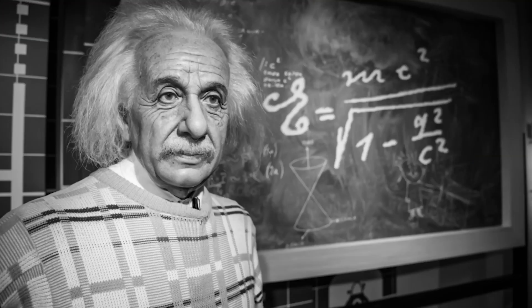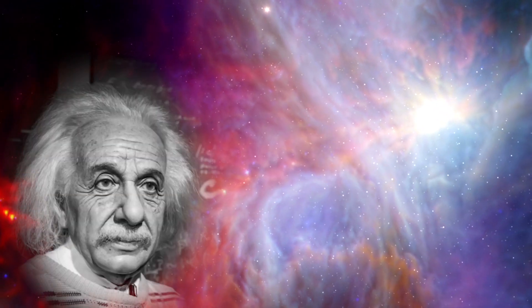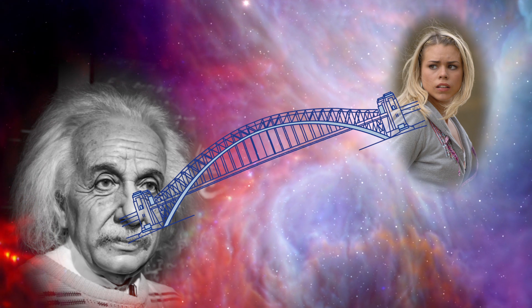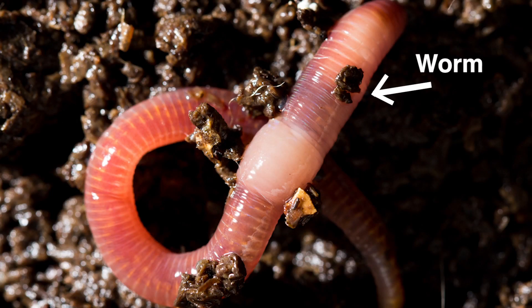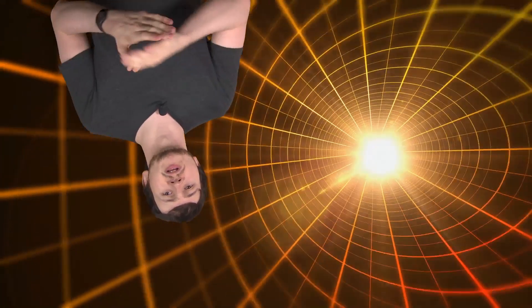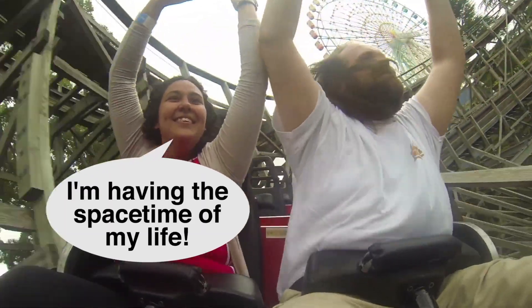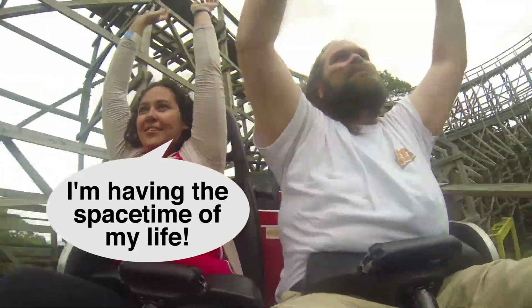Believe it or not, time travel might actually kind of be theoretically possible. Some guy called Einstein suggested way back that there could be such thing as an Einstein-Rosen bridge in space, known to you or I as a wormhole. A wormhole is like a big tunnel in space and time, which theoretically would lead you from one point in space, or time, or both, to another when you go through it. Like the most exciting roller coaster ever. Might need some help to explain this one.